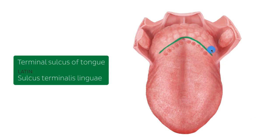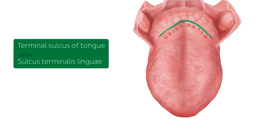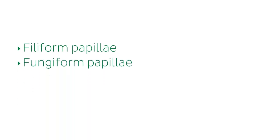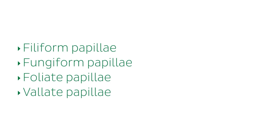Here we can see the sulcus terminalis with the valate papillae sitting anterior to it. The sulcus terminalis divides the root of the tongue from the body of the tongue. There are four types of lingual papillae: the filiform papillae, the fungiform papillae, the foliate papillae and the valate papillae. All of these papillae bear taste buds except from the filiform papillae, which we're going to discuss first.